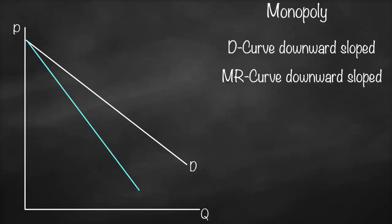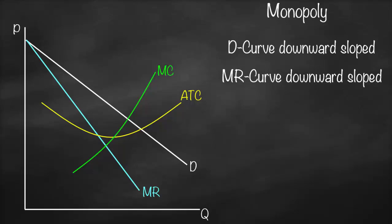So our marginal revenue will be a downward sloped curve below the demand curve. Then we'll draw our average total cost, which is U-shaped, and then our marginal cost, which will intersect our average total cost at its minimum.